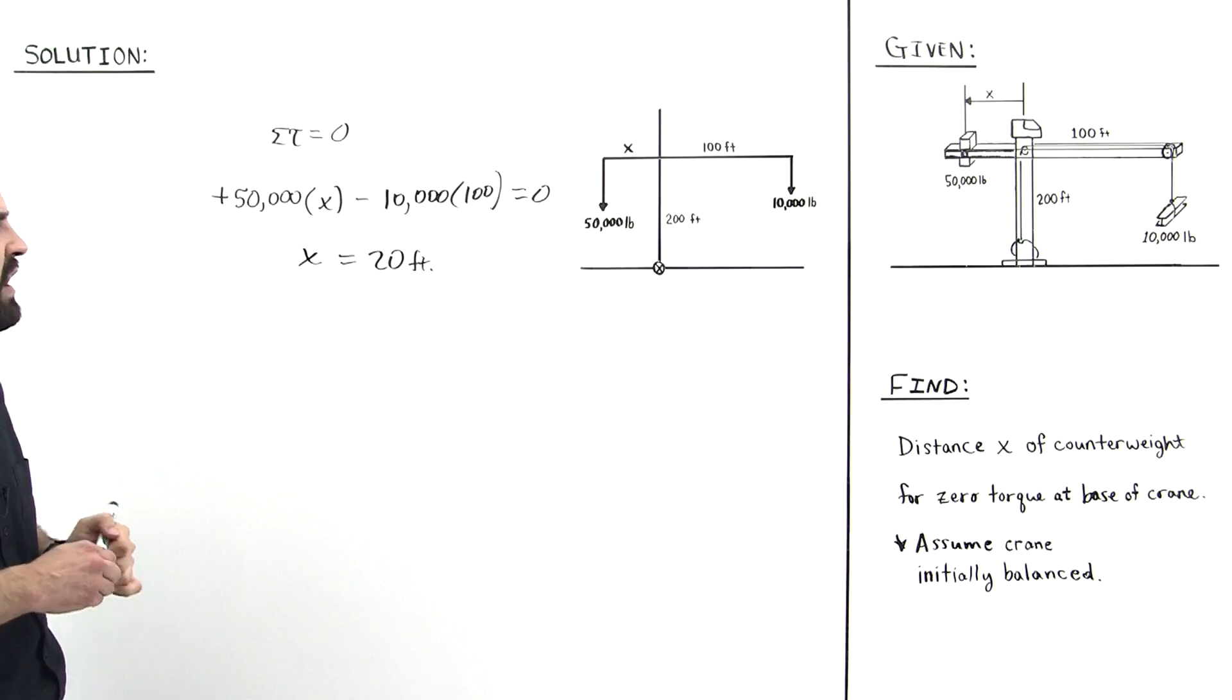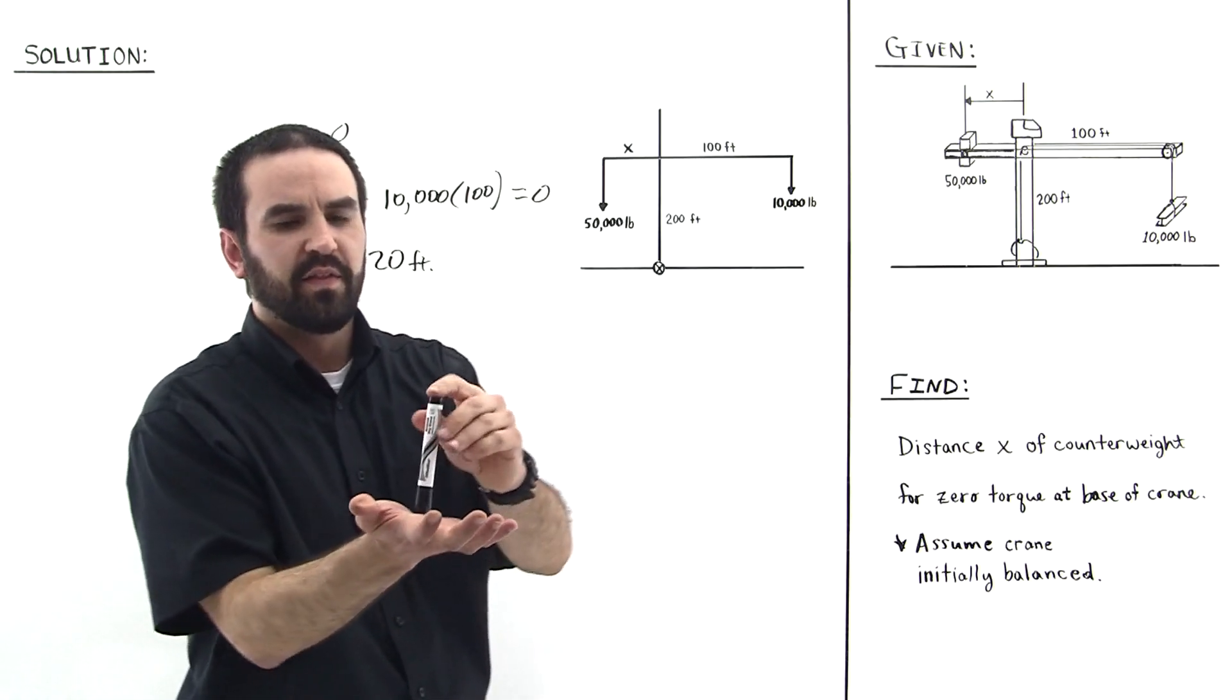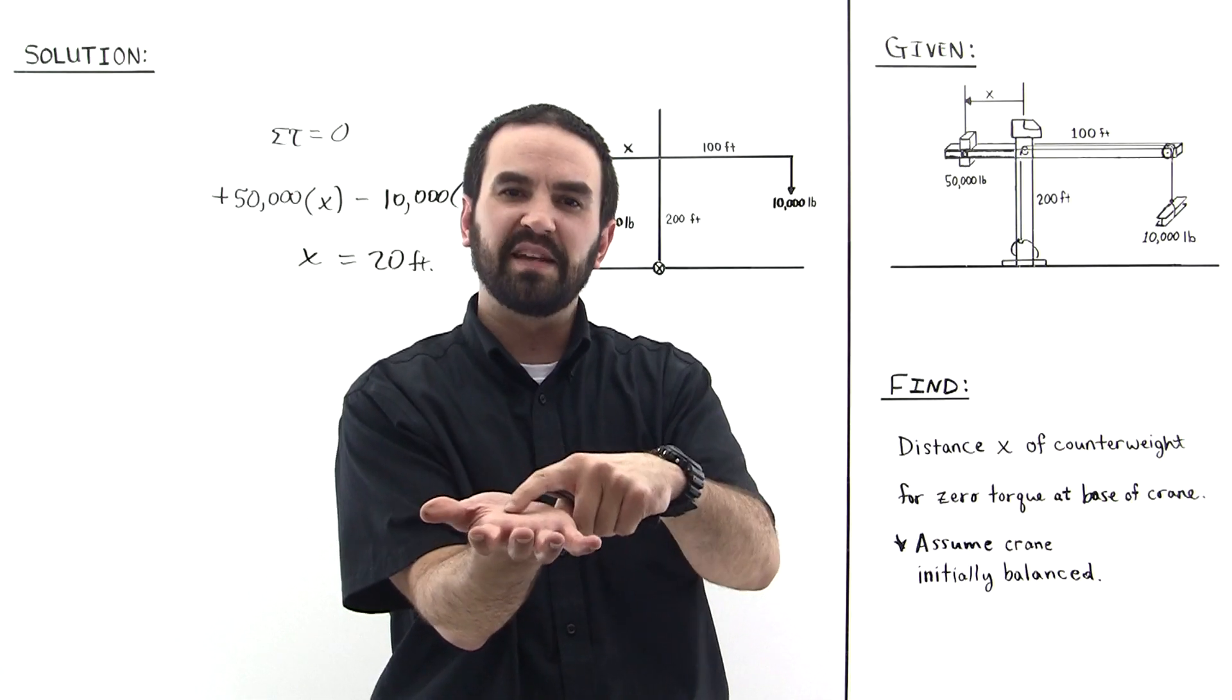So whenever x is equal to 20 feet, the crane just balances there, and very little support is needed at the base of the crane.